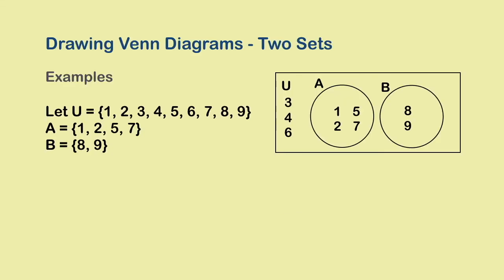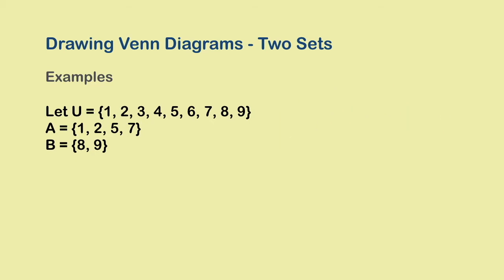In the previous video, we started the discussion on Venn diagrams and worked on this example in which we had a universal set along with two subsets that did not have any element in common. Now let's make some change to the problem to see what happens if A and B do have some common elements.